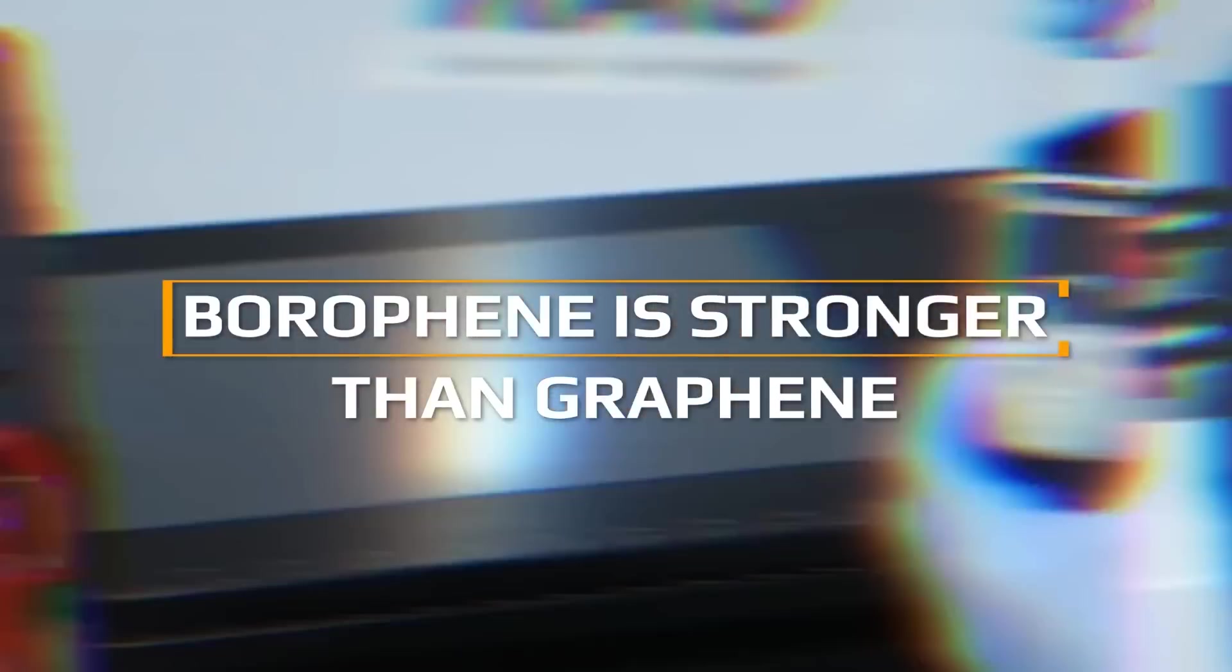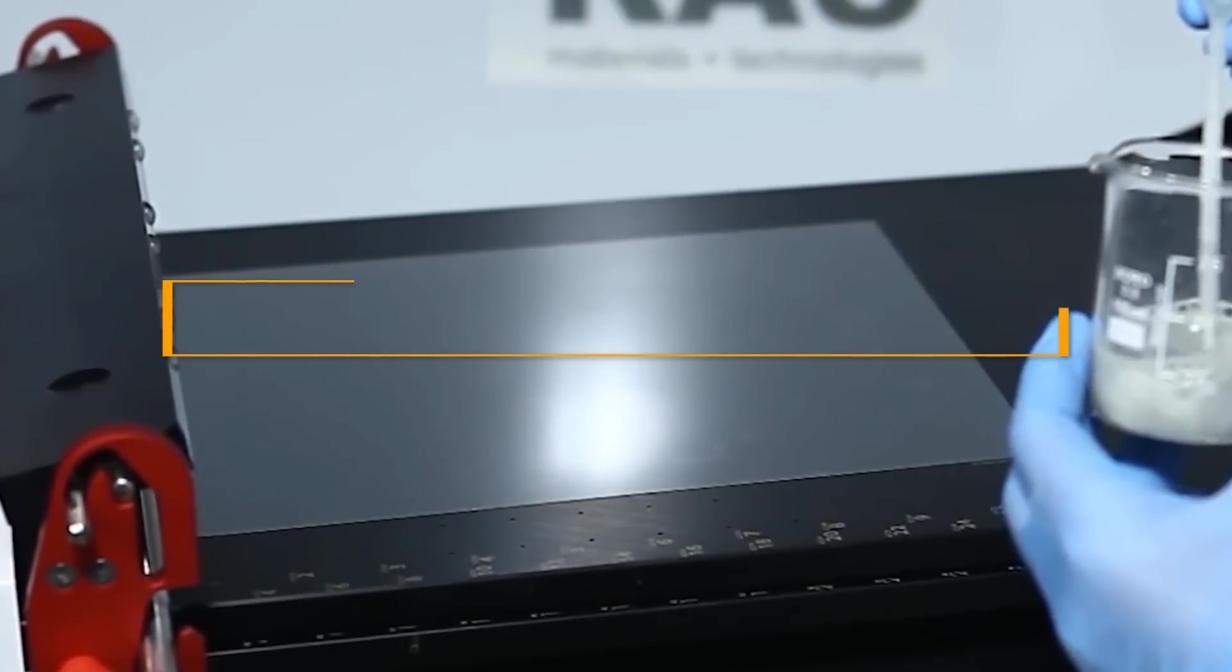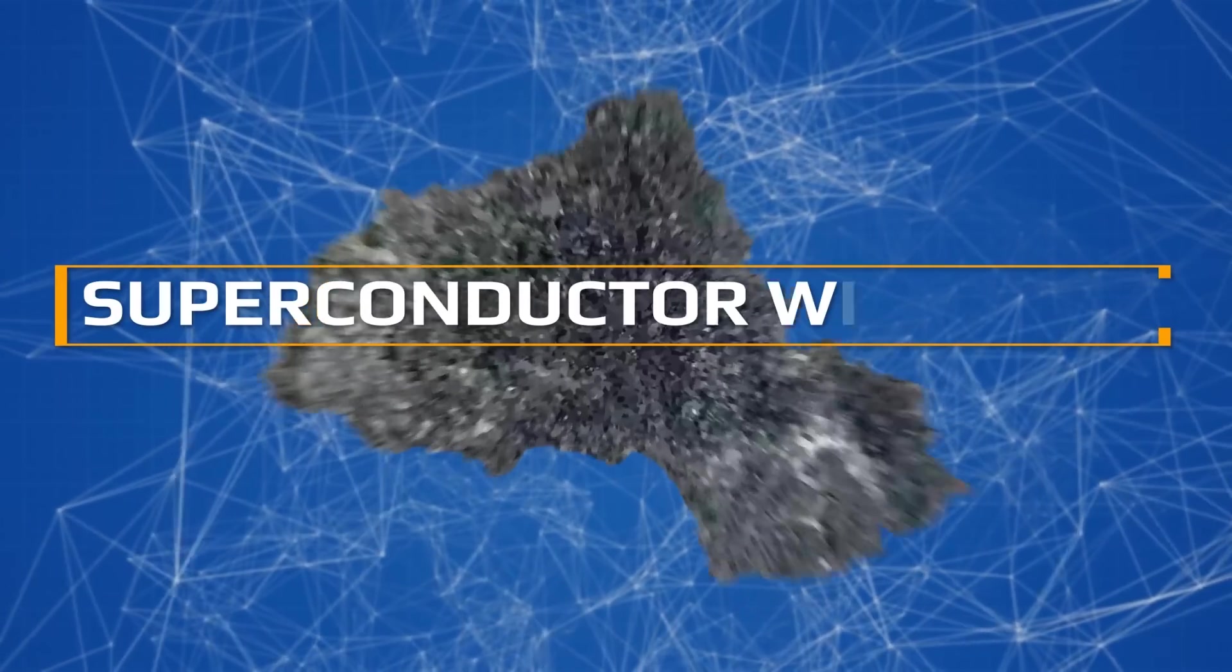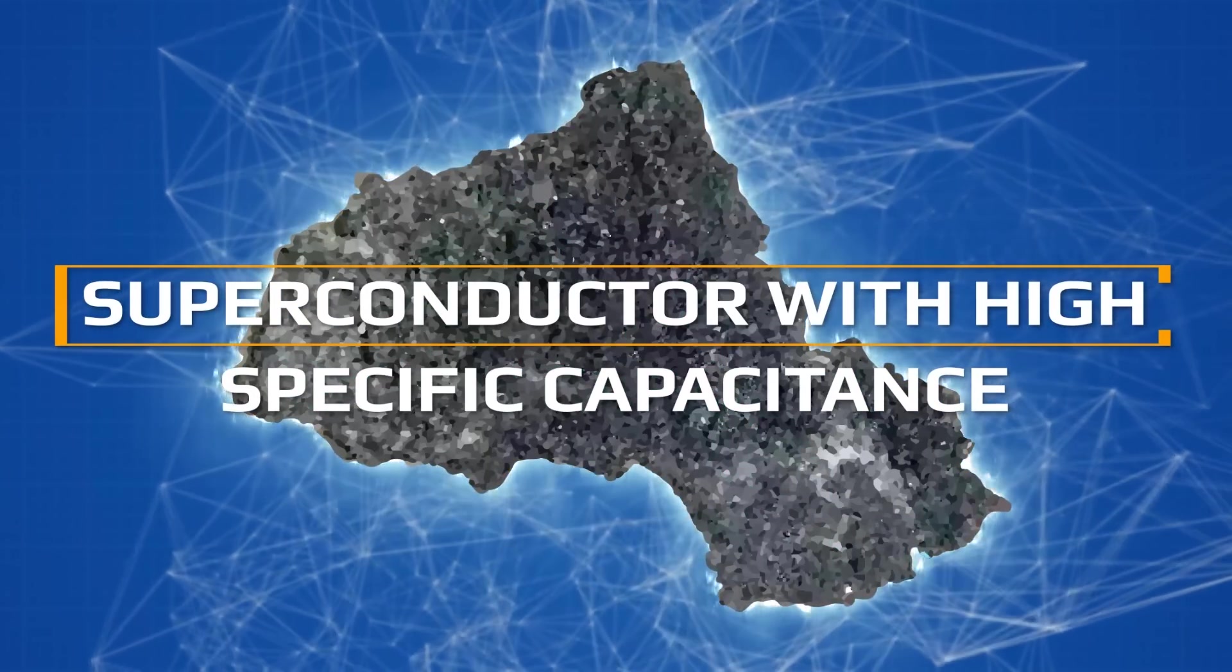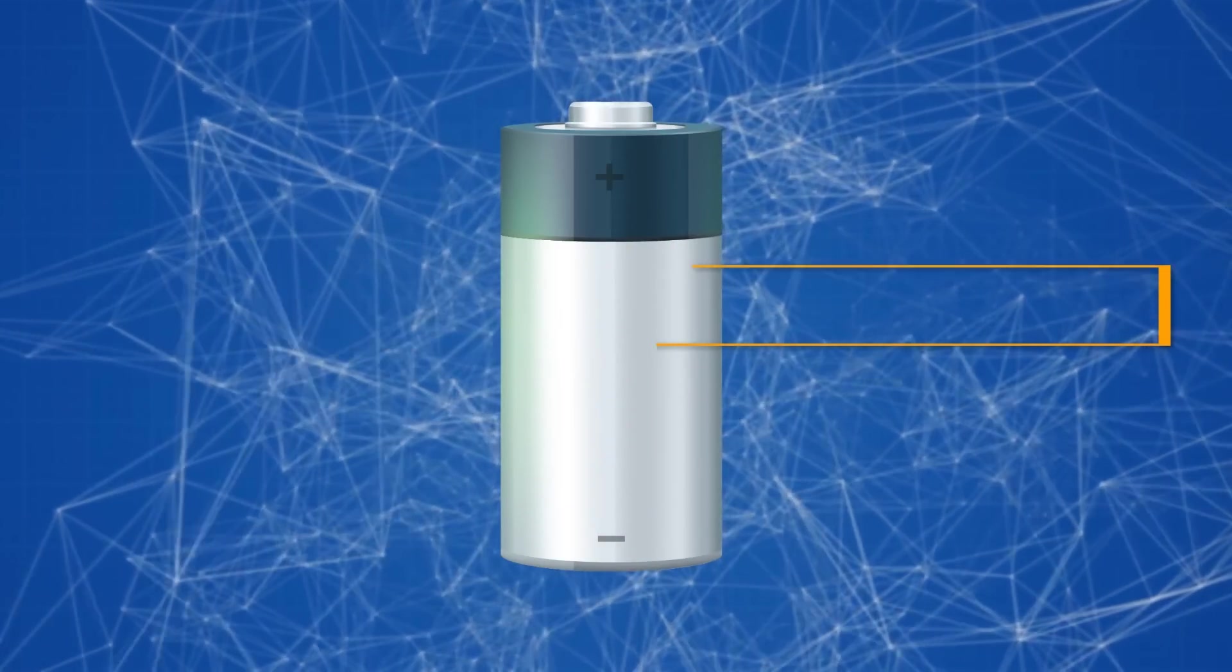Borophene is stronger than graphene and due to its unusual structure, it is light and flexible. It is a superconductor with high specific capacitance and electronic conductivity. In fact, a perfect material for storing ions.